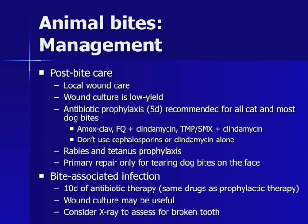Dog and cat bite antibiotic prophylaxis is given for five days; actual bite-associated infection requires ten days of therapy. The drugs are the same: amoxicillin-clavulanic acid, a fluoroquinolone plus clindamycin, or trimethoprim-sulfamethoxazole plus clindamycin. When a bite is overtly infected, wound culture may be useful. Additionally, consider getting an x-ray of the affected extremity to assess for a broken tooth, especially in cat bites. Rabies and tetanus prophylaxis should also be given when indicated.